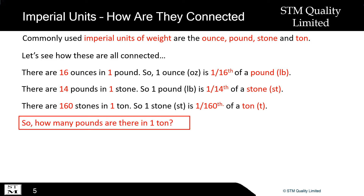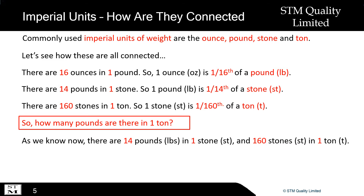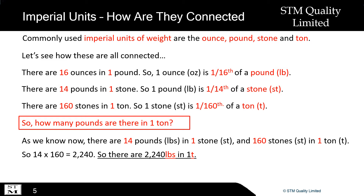So how many pounds are there in one tonne? As we now know, there are 14 pounds in one stone and 160 stones in one tonne. So 14 times 160 equals 2,240. Therefore, there are 2,240 pounds in one tonne.